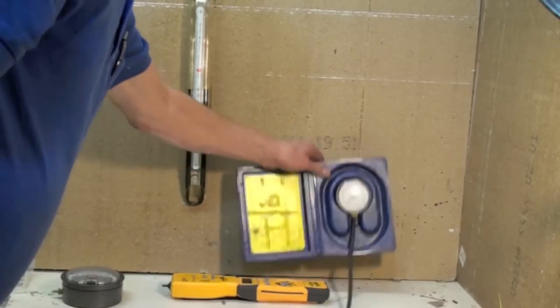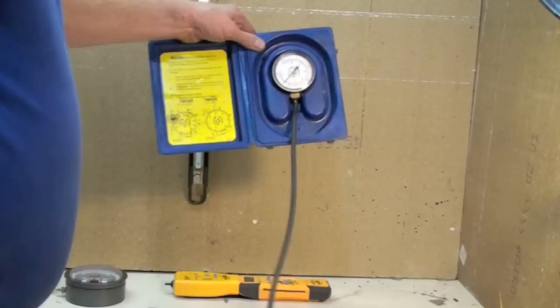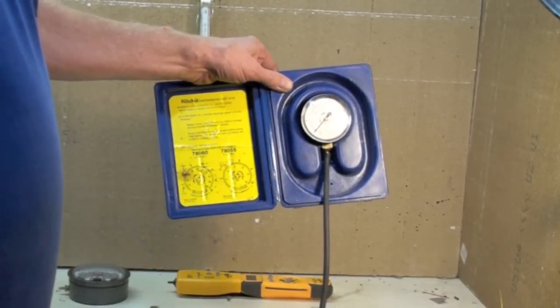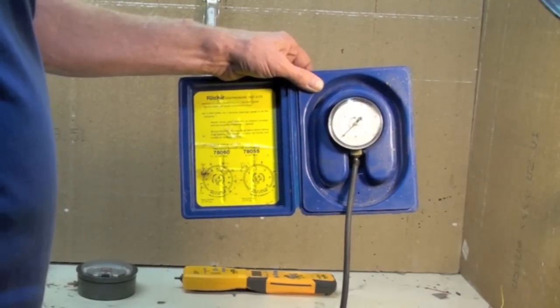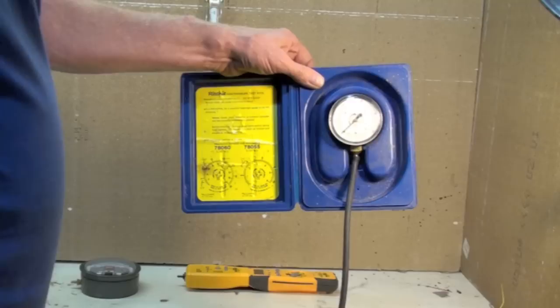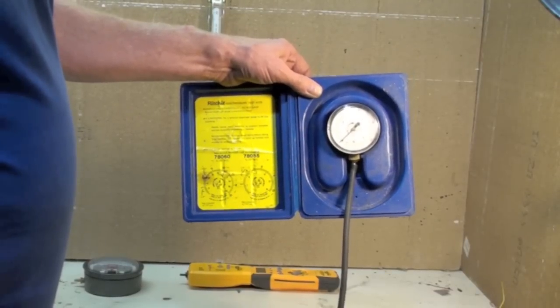Another one is this little Richey gauge. This thing's okay. It's a diaphragm gauge and reads up to 10 inches water column.